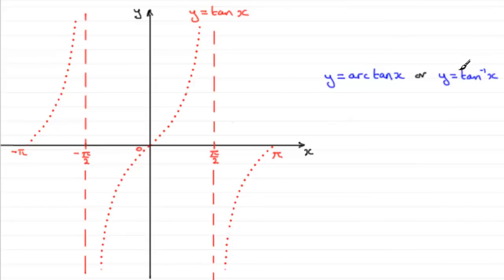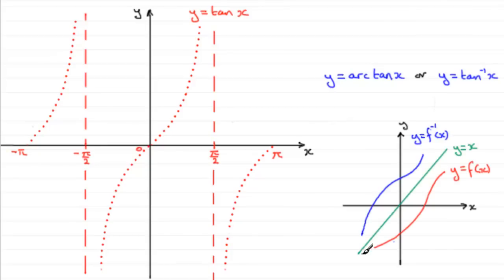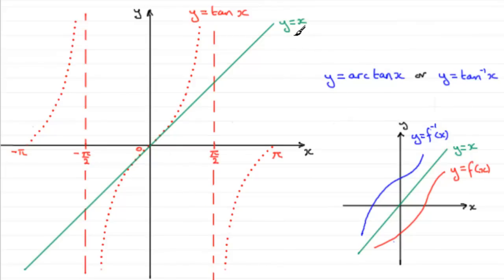When looking at inverse relationships, as I pointed out in the earlier videos in this series, you should be familiar with the fact that if you have a relationship y equals f of x, then the inverse relationship y equals f to the minus 1 of x is a reflection of y equals f of x in the line y equals x. So to establish what this looks like graphically, we need to draw the line y equals x and then think about reflecting y equals tan x in that line.